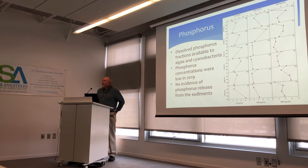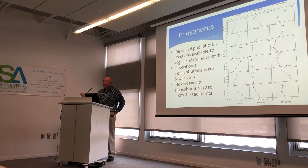This is in contrast to Cayuga Lake, where after the invasion of quagga mussels, soluble reactive phosphorus concentrations doubled — from about 5 micrograms per liter to over 10. We were anticipating seeing something similar here; however, we did not.